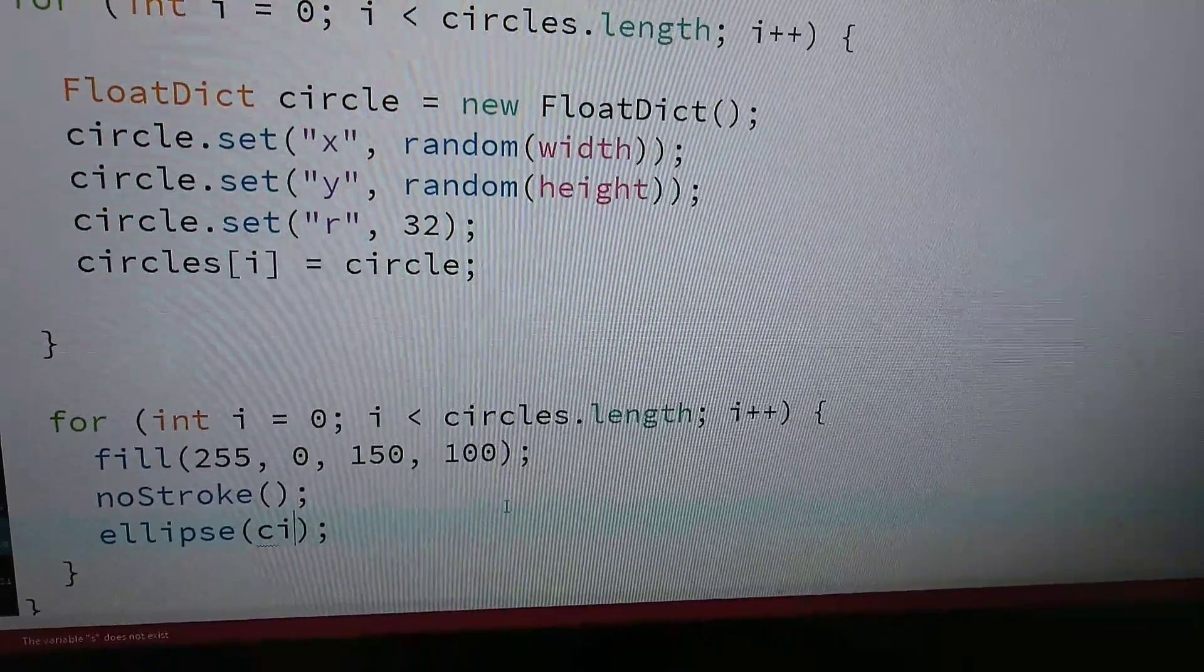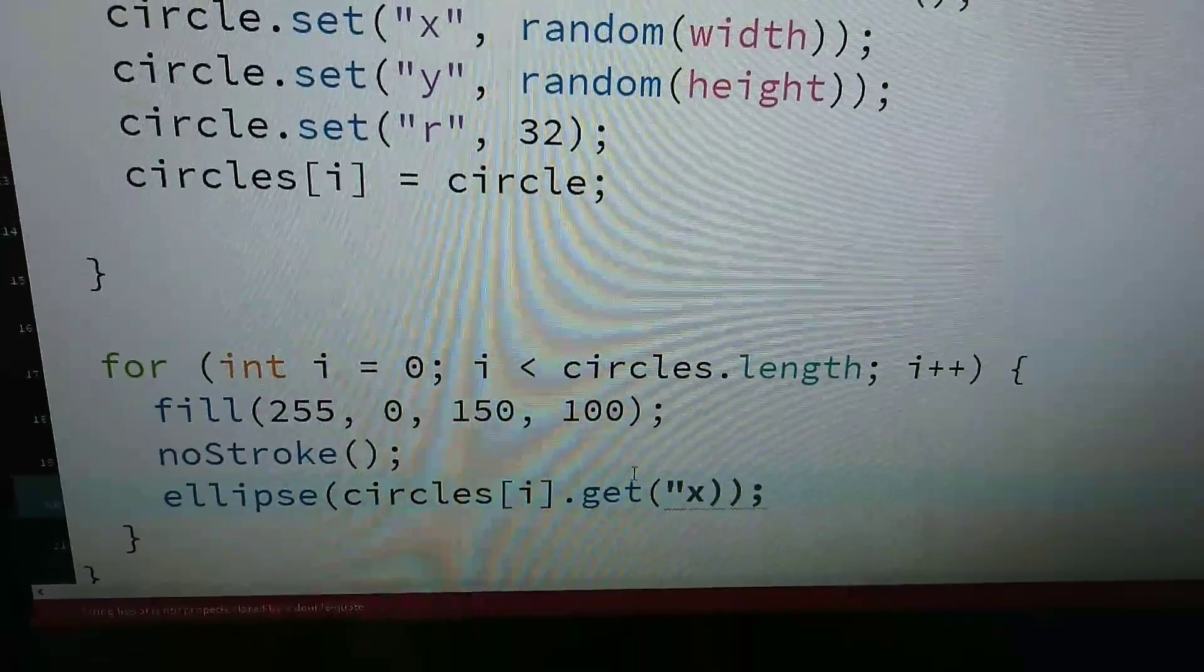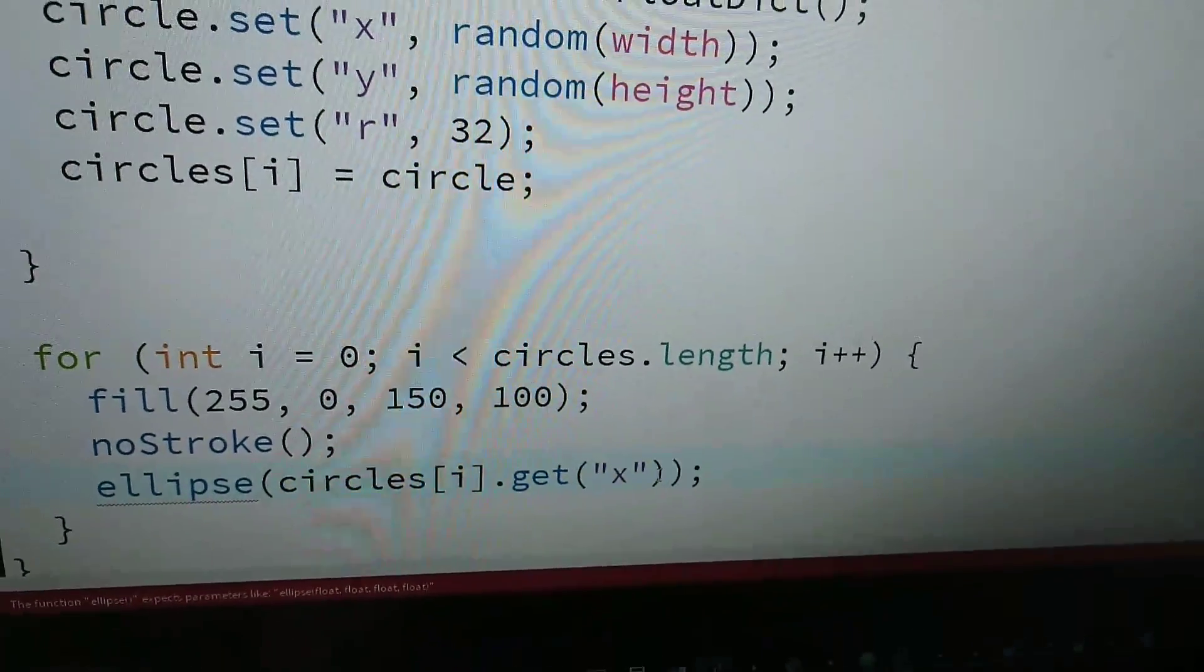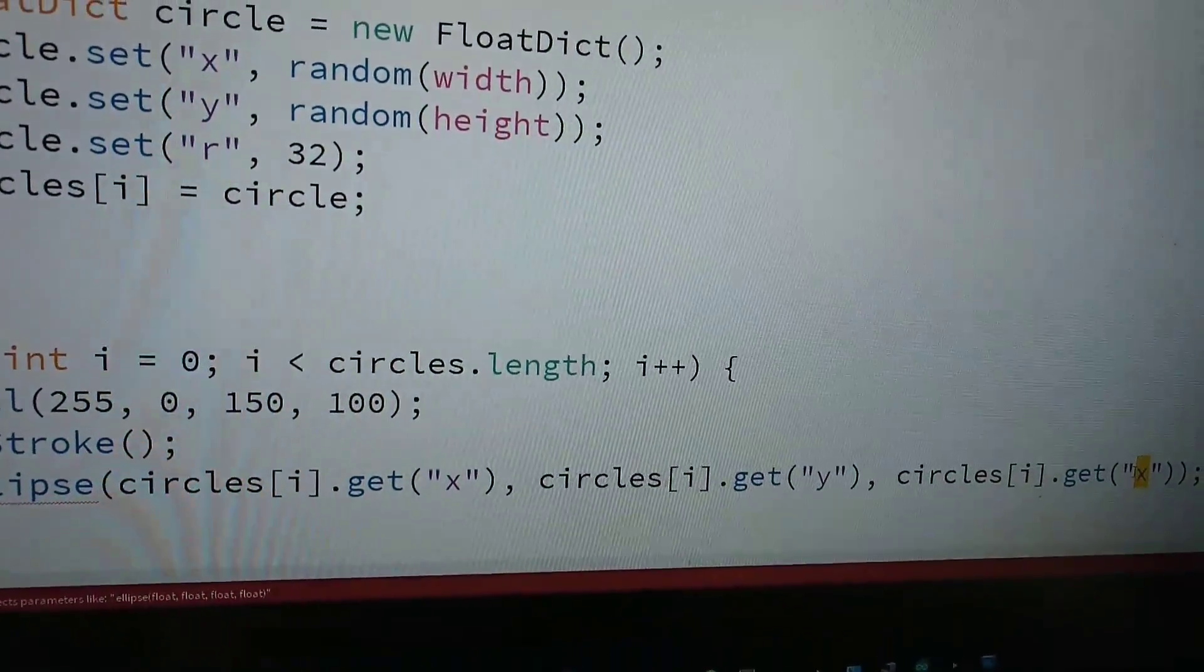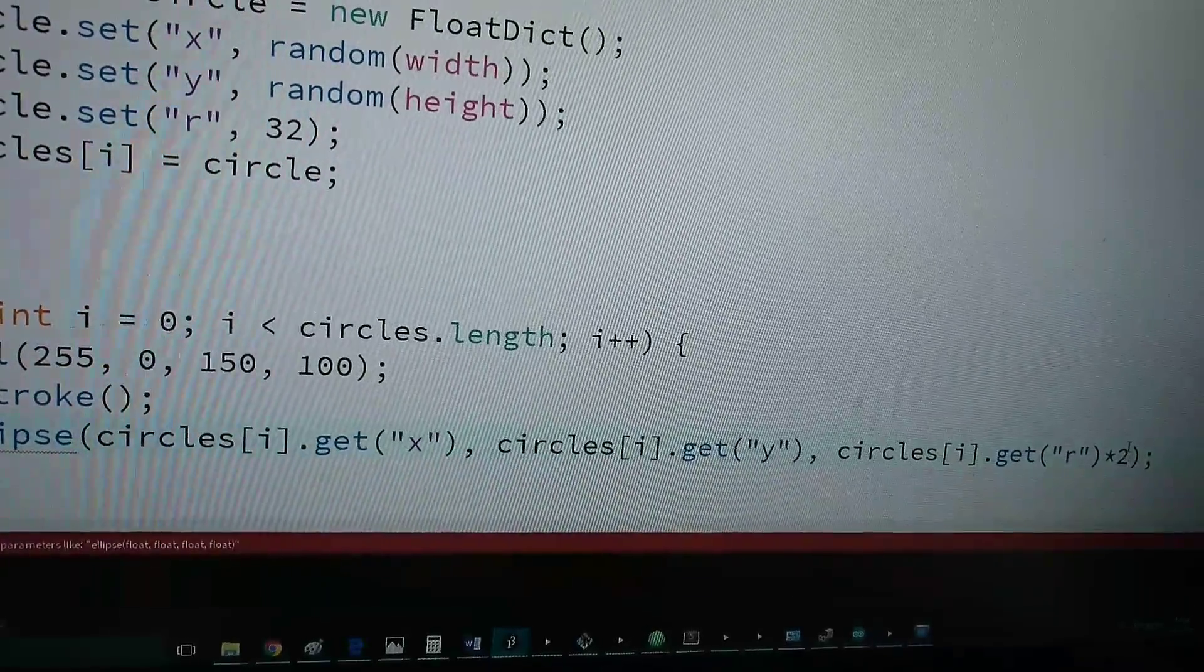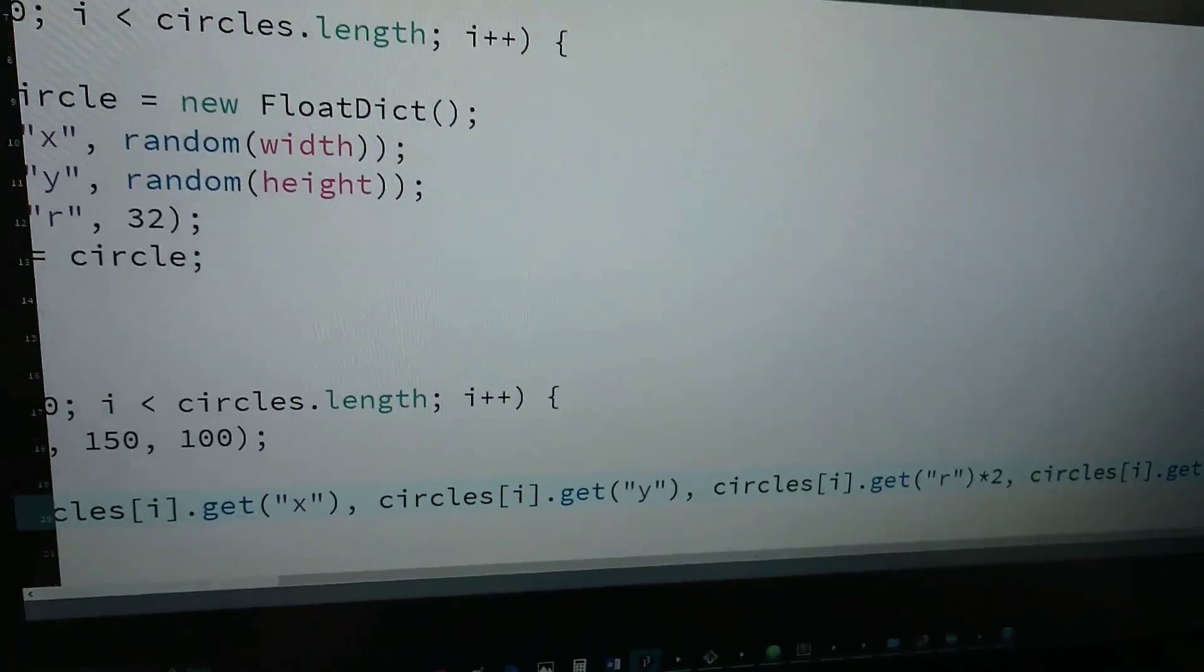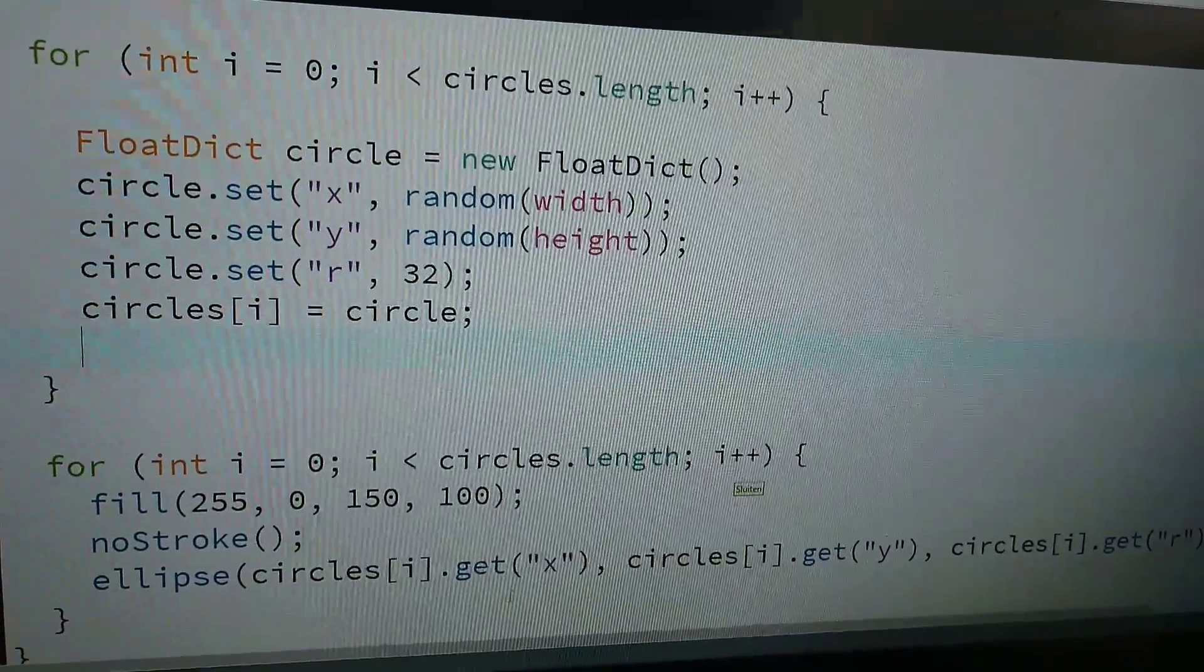It's a little bit long-winded but I have to say circles index i dot get x, get the y, and get the r times two. And then, they're still overlapping and that's because I didn't check if they don't overlap.